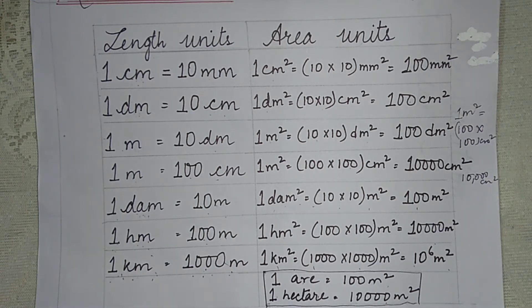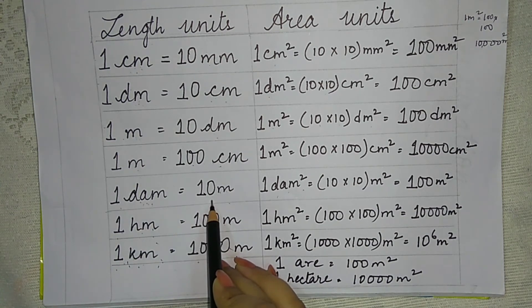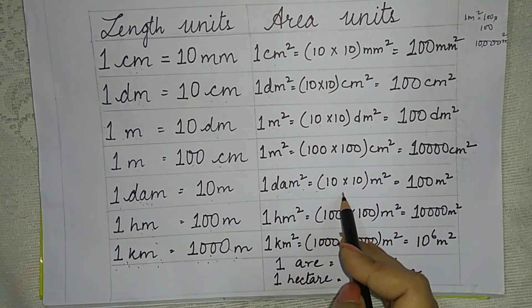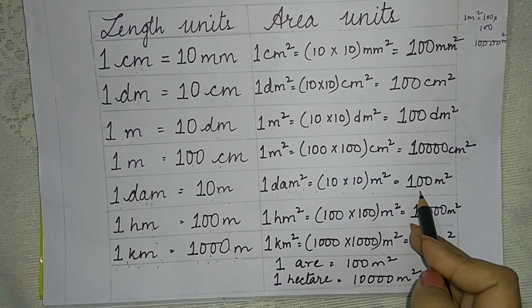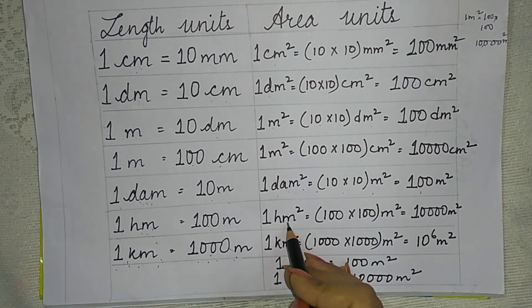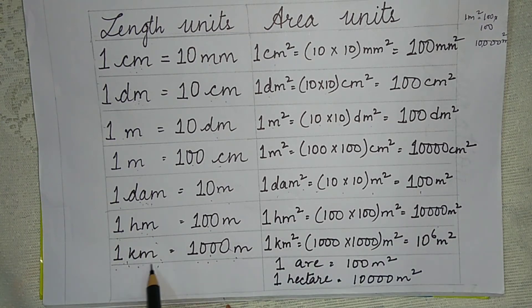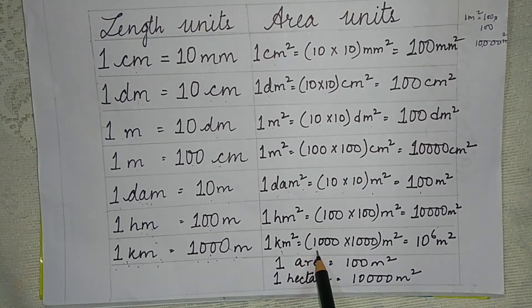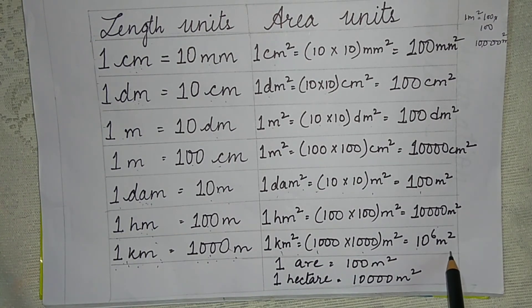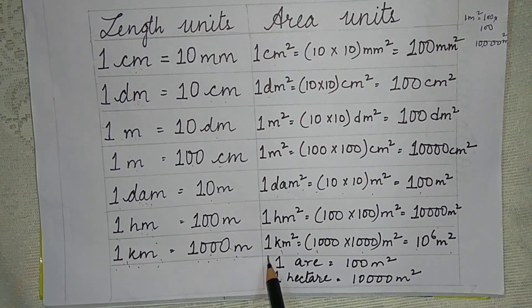1 decameter equals 10 meters, so 1 decameter square equals 10 into 10 meter square, which is 100 meter square. 1 hectometer equals 100 meters, so 1 hectometer square equals 100 into 100, which is 10,000 meter square. 1 kilometer equals 1000 meters, so 1 kilometer square equals 1000 into 1000, which is 10 to the power 6 meter square. Also, 1 are equals 100 m² and 1 hectare equals 10,000 m².